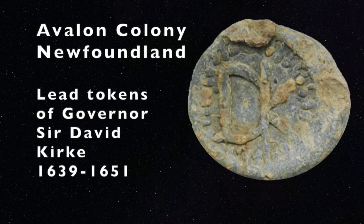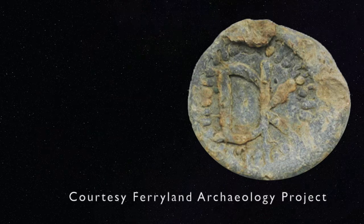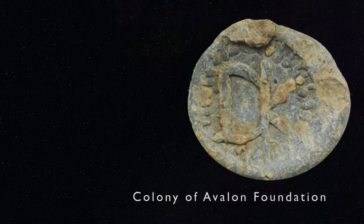In 2004, archaeologists working in Ferryland in southeastern Newfoundland made a very surprising discovery — a previously unknown type of lead token struck only with the letters DK, presumably for David Kirk, who was the governor there. Since then, others have been found in three different sizes, presumably representing different denominations. These are likely the earliest coin-like instruments ever struck in British North America, predating even the Massachusetts silver coins.